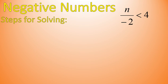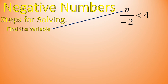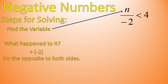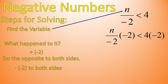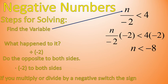In this next section, we're going to work with negative numbers. N divided by negative 2. We're going to solve it using the same steps. Where's my variable? N. What happened to it? Divided by negative 2. What's the opposite of that? Multiplying times negative 2 to both sides. The times negative 2 divided by negative 2 on the left equals 1, so it is n by itself. And on the right, you have 4 times negative 2, which gives us negative 8.